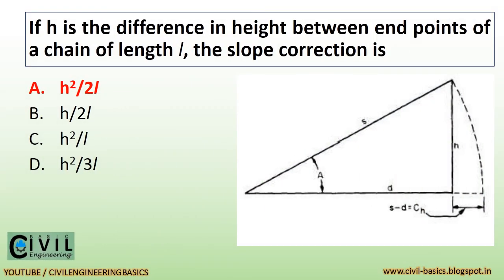If h is the difference in height between end points of a chain of length l, the slope correction is h squared divided by 2 times the length measured.